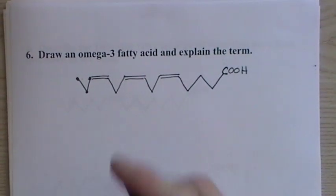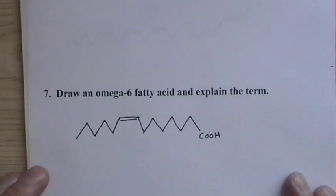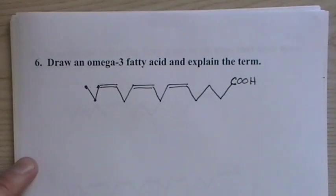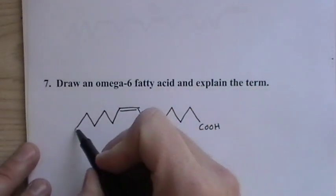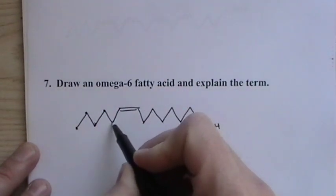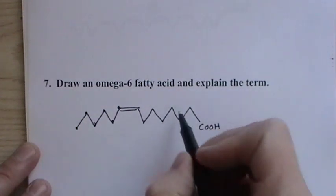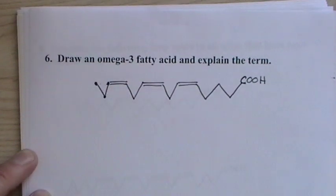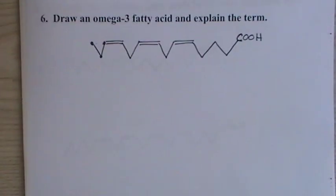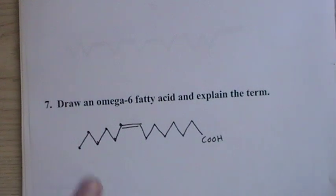Same with omega-6. Here, one, two, three, four, five, six, and then it can have more, as I drew here. It can have more than one double bond, but the first one has to be met at carbon-3 when counting from the tail end. And the same thing goes for omega-6—you just go from the tail end to carbon-6.